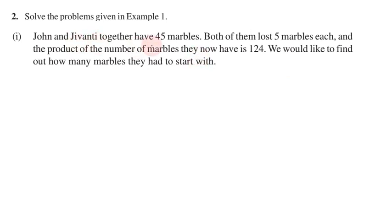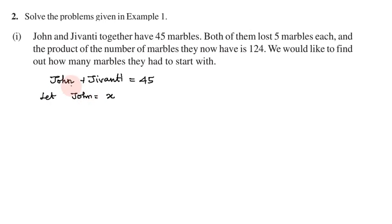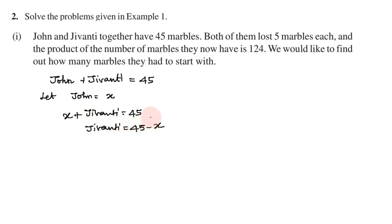So John and Jivanti together have 45 marbles. Let John's marbles be x. Then x plus Jivanti equals 45, so Jivanti has 45 minus x marbles. Both of them lost 5 marbles each, and the product of the number of marbles they now have is 124.